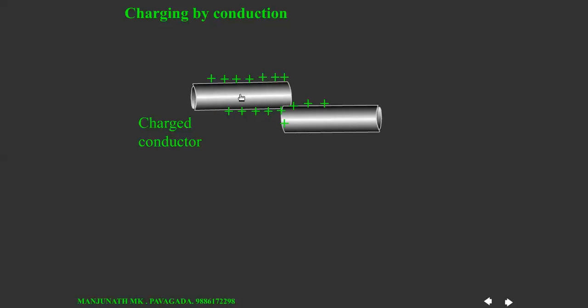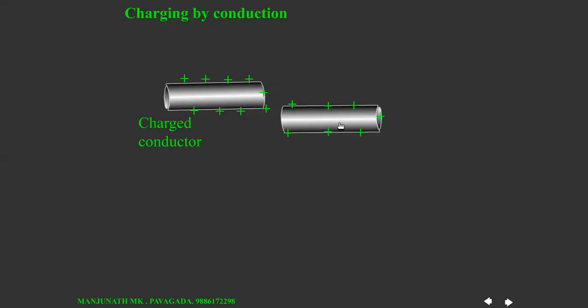After that, let us keep the charged conductor away from the neutral conductor. Some of the electrons remain on the neutral conductor and they will be redistributed on the surface of the neutral conductor.